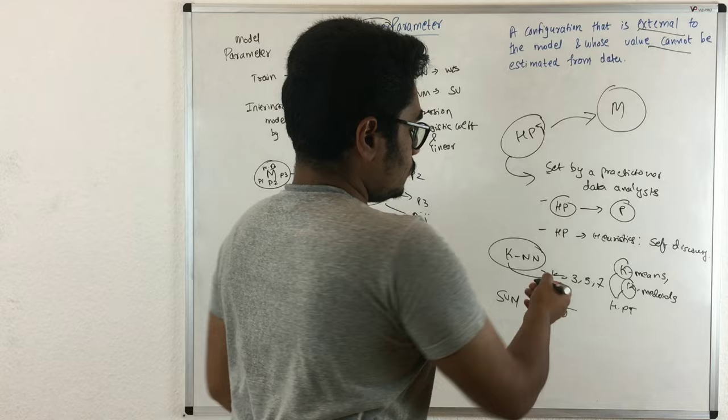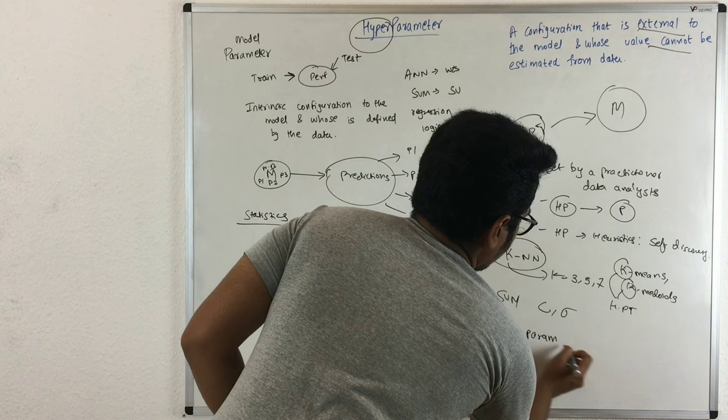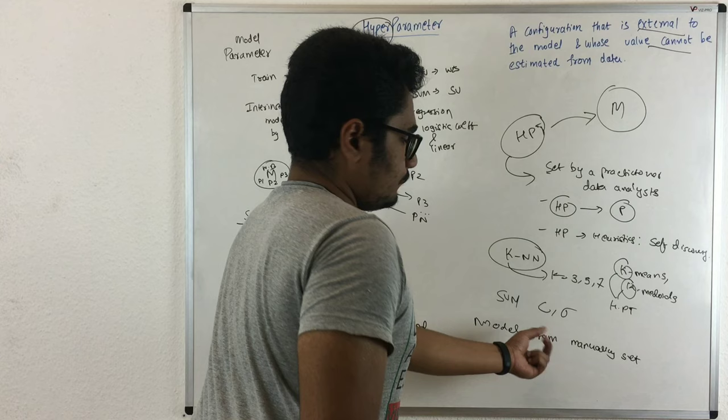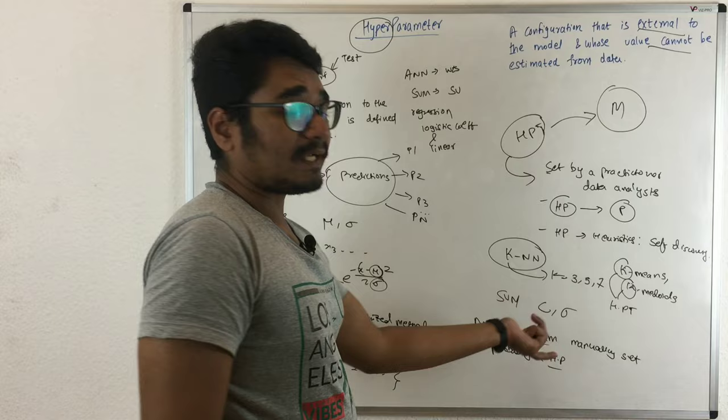How do you differentiate between a model parameter and a hyperparameter? If a parameter is manually set, then it is probably a hyperparameter. If you don't manually set it, then it becomes a model parameter. But if you set it manually, then that becomes a hyperparameter.